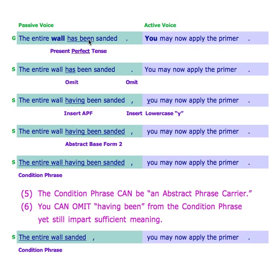The wall has been sanded — the wall didn't sand itself; the subject is not performing the action. But in the second clause the subject is performing the action. We omit has and the period, insert our abstract pro form, insert the comma, and make the next word lowercase — ending up with 'the entire wall having been sanded, you may now apply the primer.' That's abstract base form two. And what I discovered is that you have a condition phrase here — formerly called an absolute phrase, a name I've replaced.